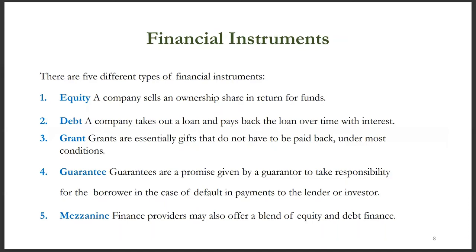One type is debt. Debt can be secured by taking out a loan with an interest payment. Another type is a grant.